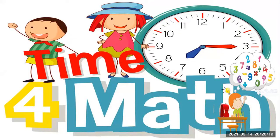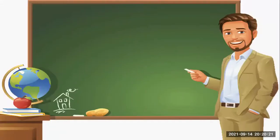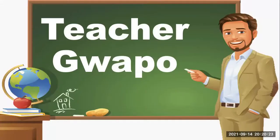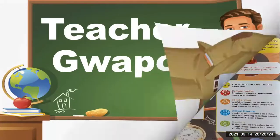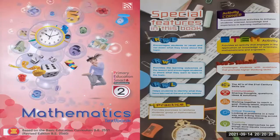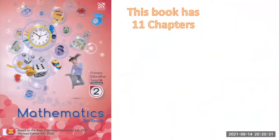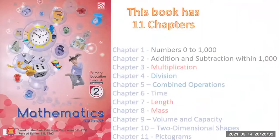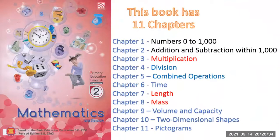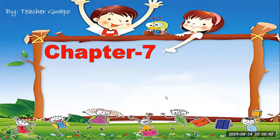Time for math once again! My name is Teacher Gwapo, and this is the book that we are using here — Smart Class for Grade 2. This book has 11 chapters. The ones in black color means we are already done with those. Now we are in Chapter 7, talking about length.